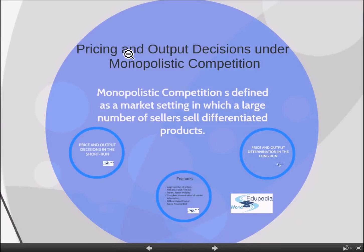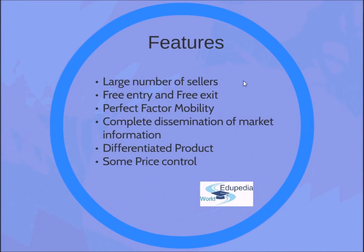Hello and welcome back to edupediaworld.com. In this session we will be discussing the third type of market structure, that is monopolistic competition. Now because you already know about perfect competition and monopoly, you have all the information you need to analyze monopolistic competition. Its name itself suggests that it is a mix of characteristics of both market types. So let's have a look at the characteristics of monopolistic competition.